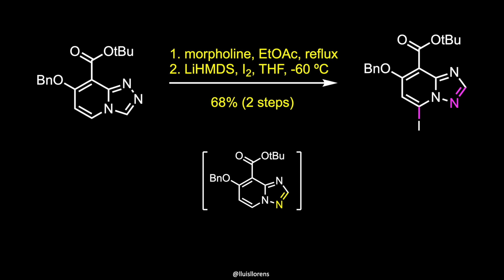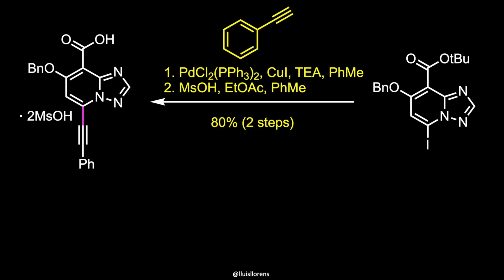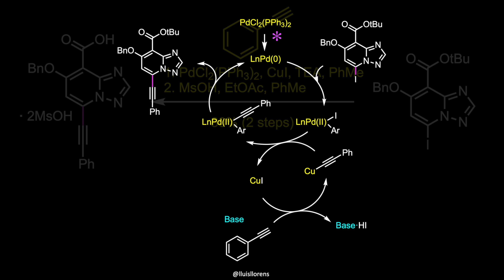Regioselective iodination gave the coupling precursor that was subjected to a Sonogashira coupling with phenylacetylene. In a Sonogashira reaction, the palladium precatalyst is first activated. Then the cycle begins with the oxidative addition of the aryl halide to the palladium(0) catalyst. The palladium catalyst inserts itself into the carbon-halogen bond and gets oxidized from palladium(0) to palladium(II). The resulting complex reacts with copper acetylide in a transmetalation step, regenerating the copper catalyst and yielding a complex that undergoes reductive elimination to yield the coupled organic product and regenerate the palladium catalyst. Prior to this last step, a trans-cis isomerization may occur to locate the substrate motifs in close vicinity.